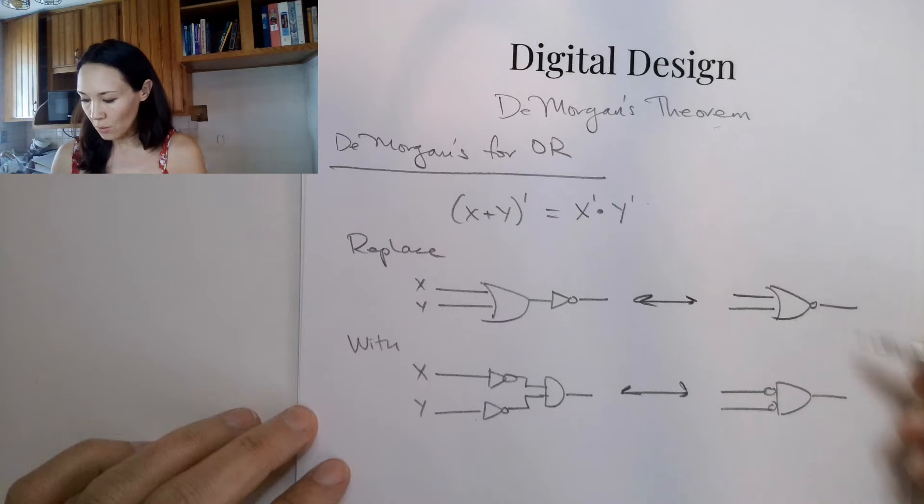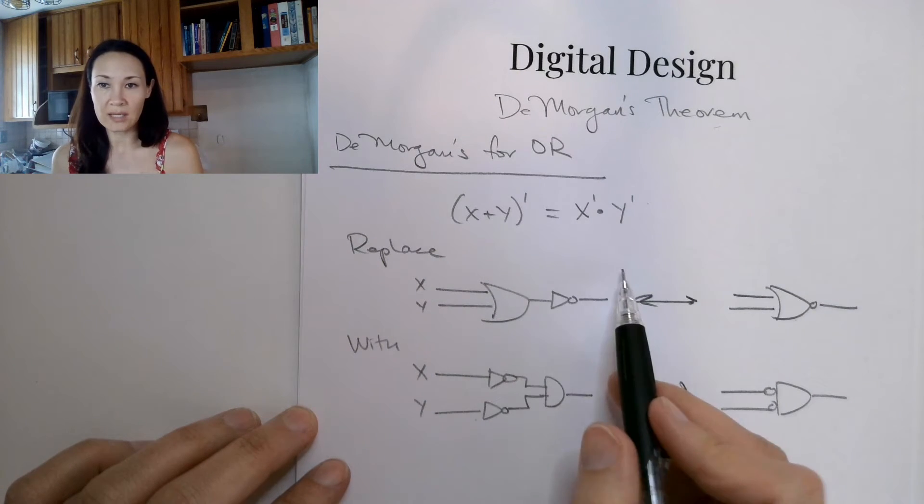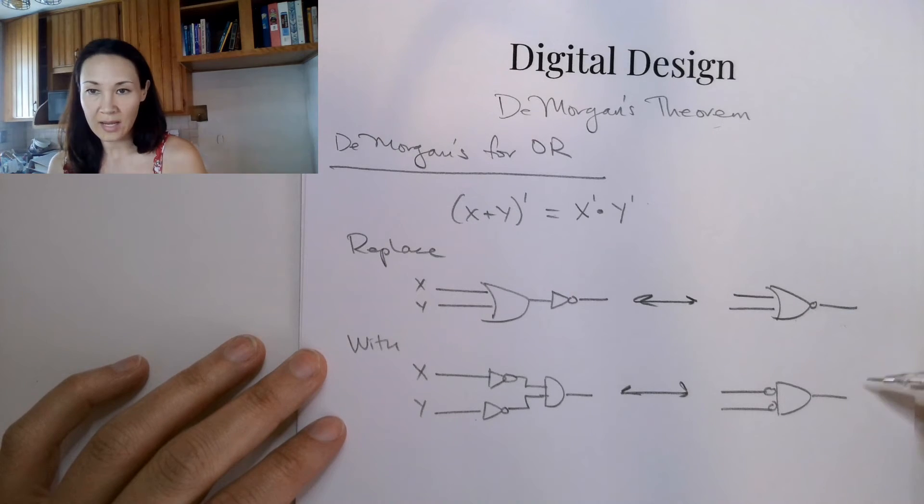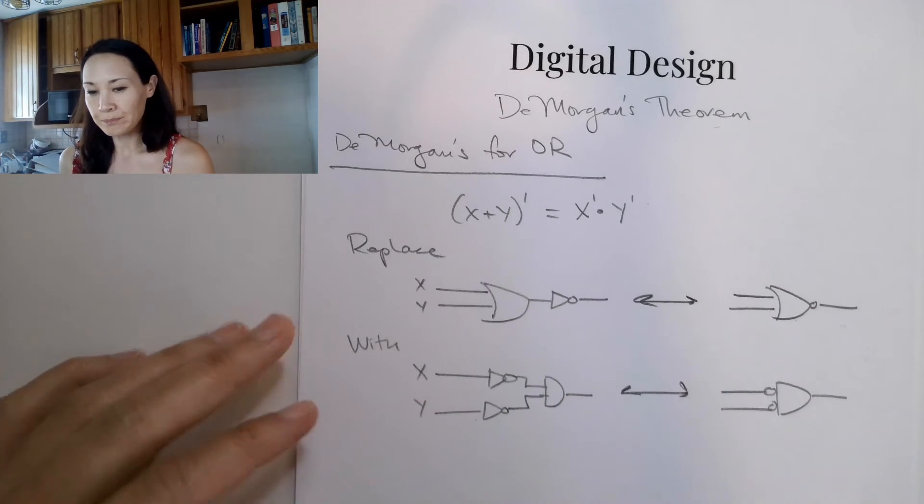So these two gates are basically equivalent by De Morgan's. So this is the logic gate array equivalent of what this is telling us algebraically.